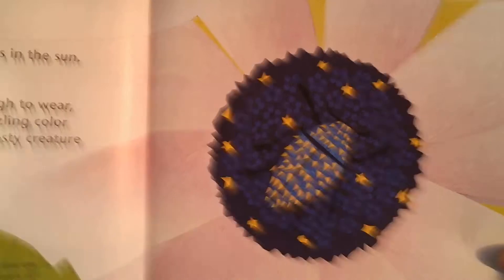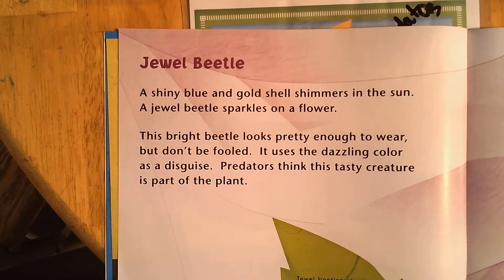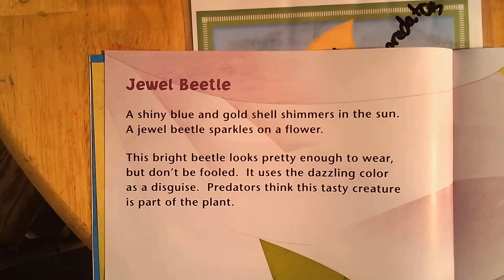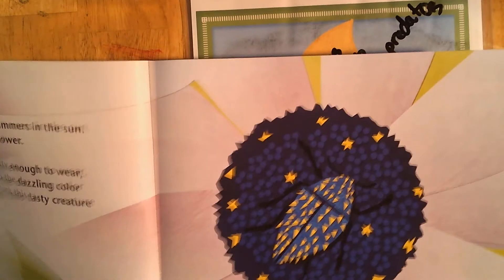That's a pretty colored bug — jewel beetle! A shiny blue and gold shell shimmers in the sun as a jewel beetle sparkles on a flower. This bright beetle looks pretty enough to wear, but don't be fooled — it uses the dazzling color as a disguise. Predators think this tasty creature is part of the plant. Jewel beetles also use their bright colors to find mates. So if it's tasty, it's going to want to hide even more — and its color makes it blend into a flower to hide.